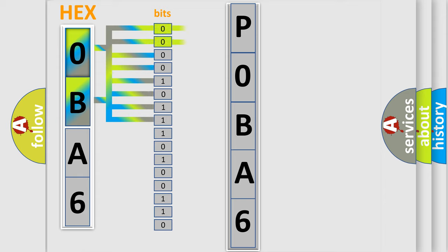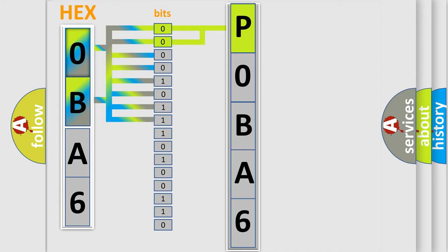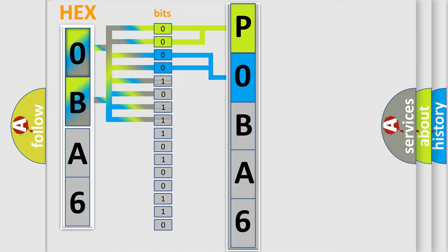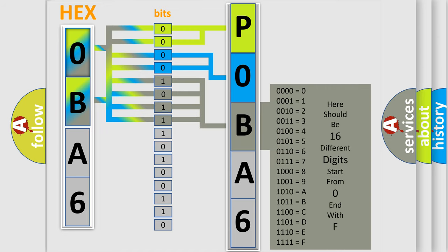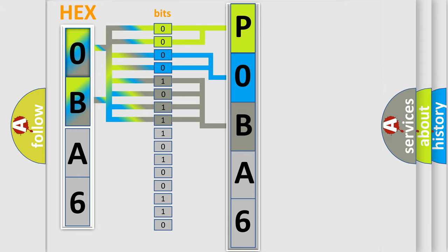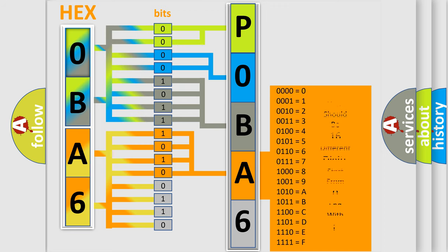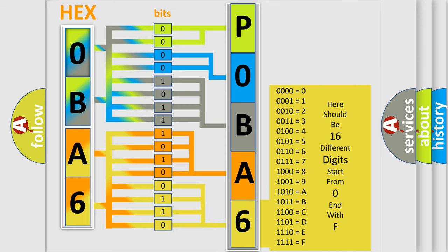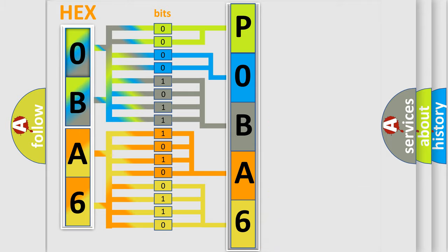By combining the first two bits, the basic character of the error code is expressed. The next two bits determine the second character. The last bits of the first byte define the third character of the code. The second byte is composed of a combination of eight bits. The first four bits determine the fourth character, and the combination of the last four bits defines the fifth character. A single byte conceals 256 possible combinations.